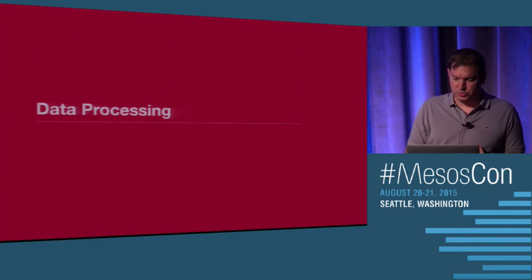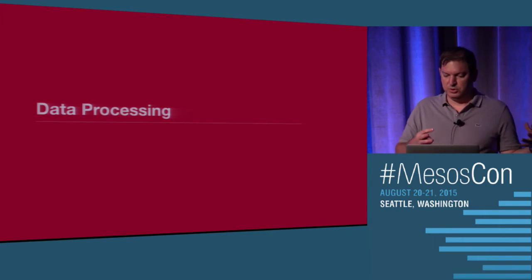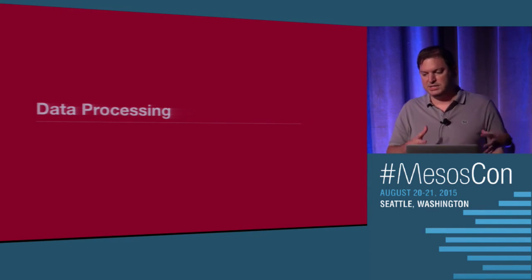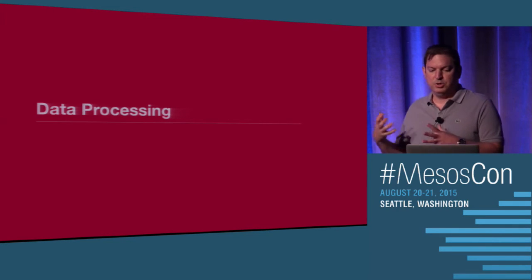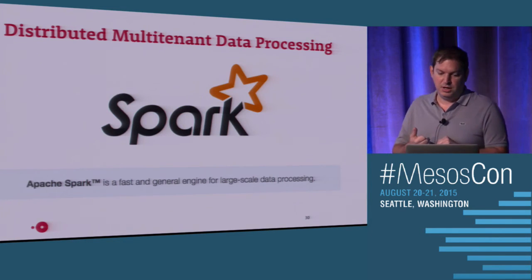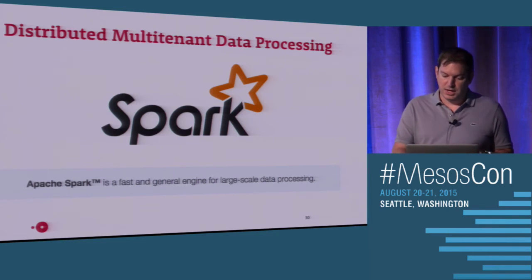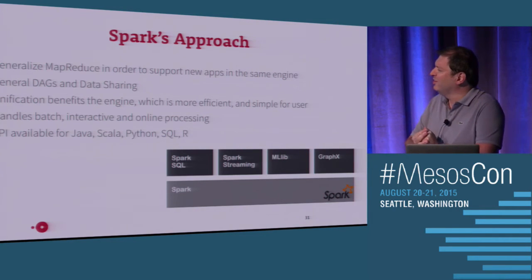With that, I'll switch to data processing. The first part of the talk was about how we run applications and make this process sane so anyone in the company can deploy within a day. Now I'm going to talk about how we manage the complexity of data processing using Mesos. For that, I'll mention Spark. Spark has been a great success for us — we've been using it for over a year and a half. If you don't know what Spark is, it's a sister project from Mesos; they both were born in the AMP Lab at UC Berkeley.